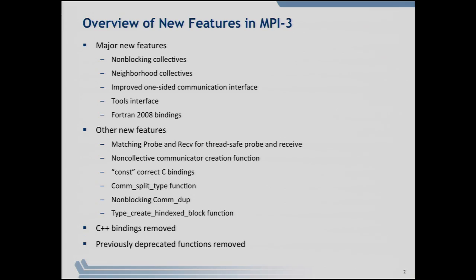As Rusty mentioned yesterday, the C++ bindings originally added in MPI-2 were removed in MPI-3. They were deprecated in MPI-2.2. Deprecated means they are still there but you are discouraged from using them — that's what MPI does when it wants to remove something. It doesn't remove things easily; most things remain because it doesn't want to break codes. The first step is to deprecate, informing users this is an old feature that may go away, and eventually it does.